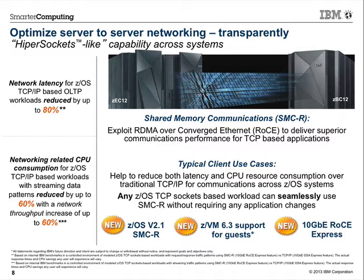In addition to latency, RDMA technology also provides CPU savings when moving large amounts of data. A lot of the message movement and receiving is processed by the adapter — effectively another type of offload. In most cases, we see up to 60% CPU savings, and in some cases up to 60% throughput improvement with RDMA and SMCR versus standard TCP/IP over standard Ethernet — always comparing 10-gigabit Ethernet to 10-gigabit RoCE.